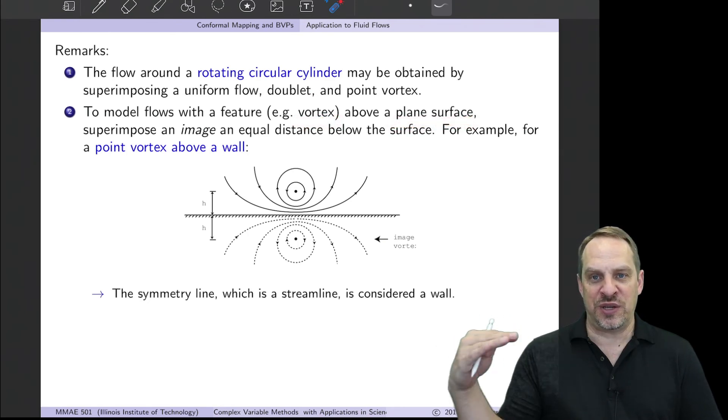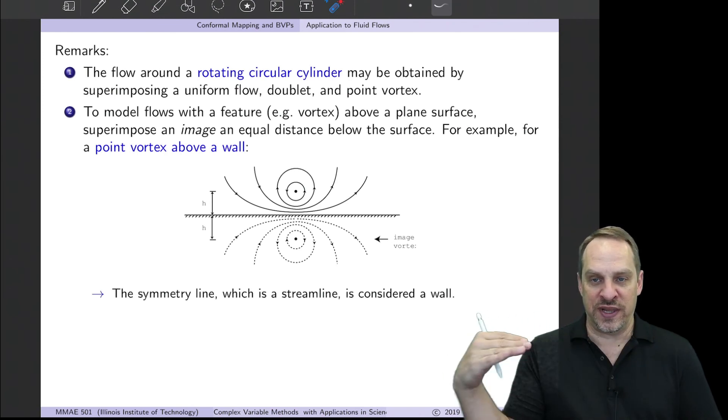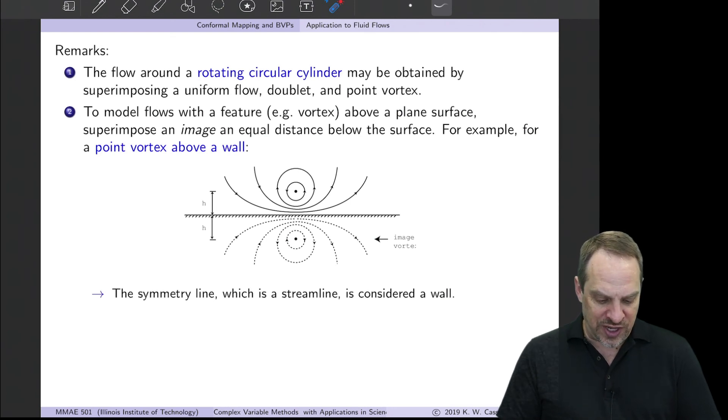You think, well, a plane surface, that means I need to get a streamline that corresponds, say, to the real axis, a straight line. That'll be my surface. So we can do that by taking a vortex plus its image: a point vortex above and a point vortex below. Same height, say h, above and below. And then you get a symmetry line. This symmetry line is a streamline.